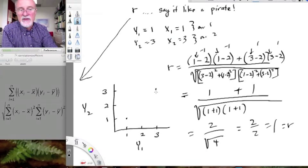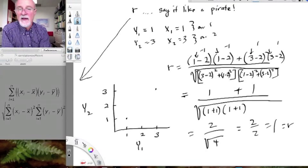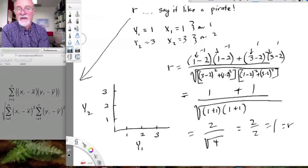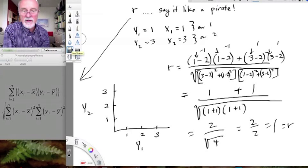I'm going to leave it to yourself by the way to do this different example, but I want to prove it, I want you to prove to yourself that this and this will also give you r equals 1.